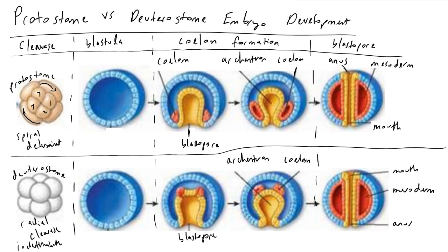Continuing — this is different from what we see in deuterostomes, because with deuterostomes, we see our coelom formation occurring within the endoderm, this yellow tissue layer. And instead of forming and splitting off from the endoderm, what we see with deuterostomes is this endoderm layer beginning to infold. This infolding will eventually become the coelom.